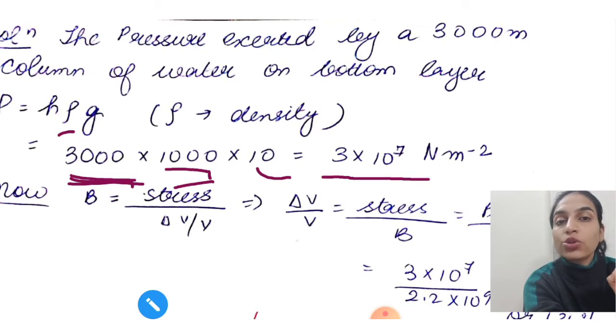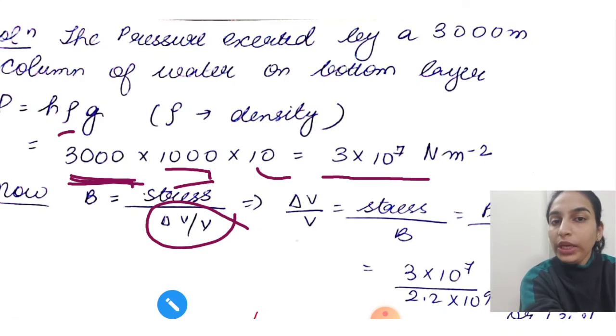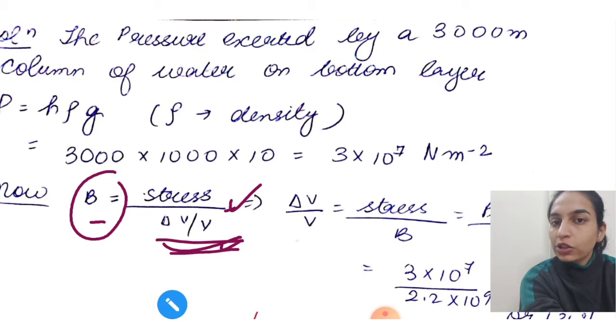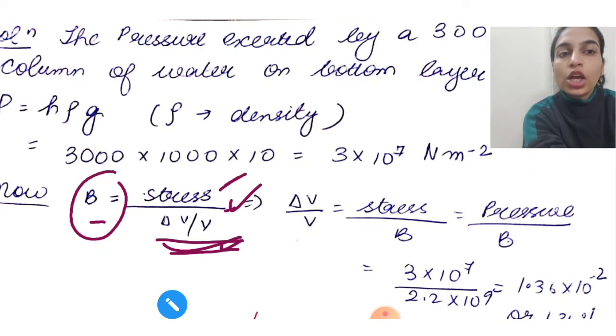Now what do you need to calculate? Fractional compression, that is delta V by V. We know that bulk modulus is stress upon strain, and strain is delta V upon V. So from this, delta V by V obviously will have no unit.